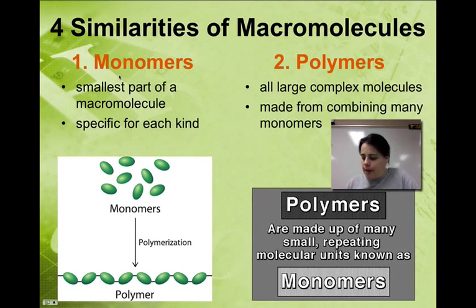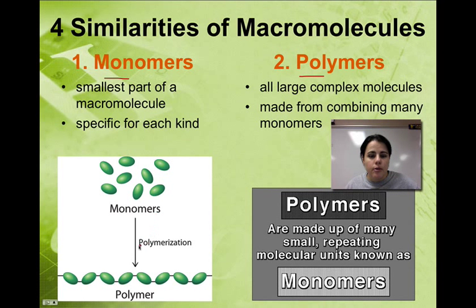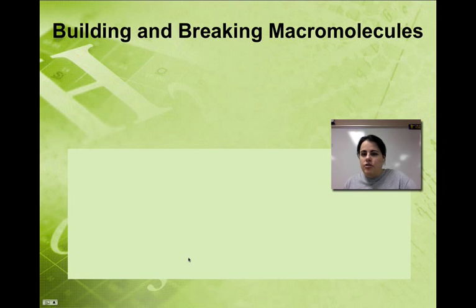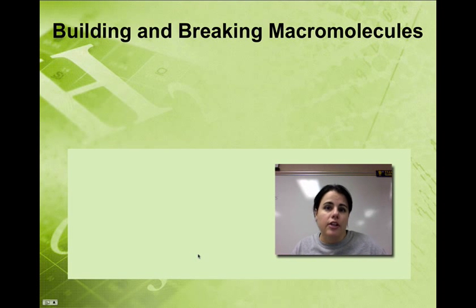But I just want to recap one more time and make sure you understand the four similarities that carbs, proteins, lipids, and nucleic acids have. They are polymers. They are complex molecules made from a lot of small pieces called monomers. So this is showing our monomers being put together into a long chain called a polymer. That process is called polymerization, because it makes a polymer. Now, each of these molecules has to be built up or broken down. How do you get those little pieces together? Or how do you break them down, like during digestion?